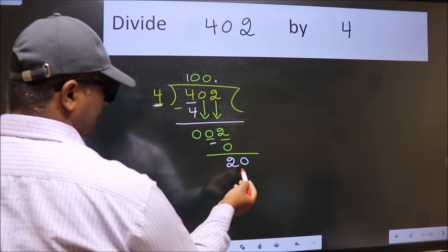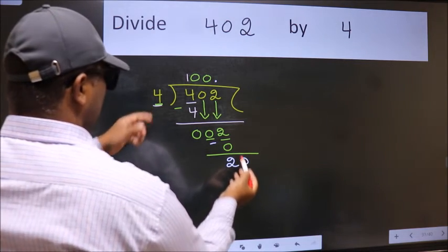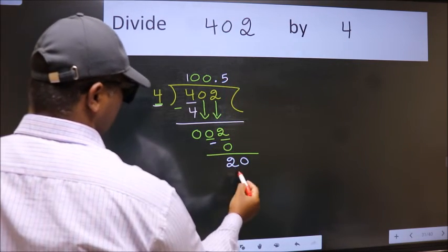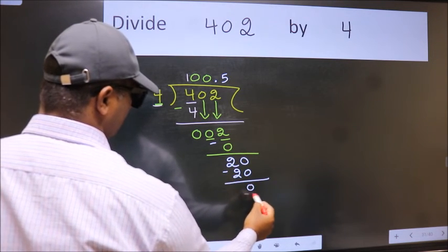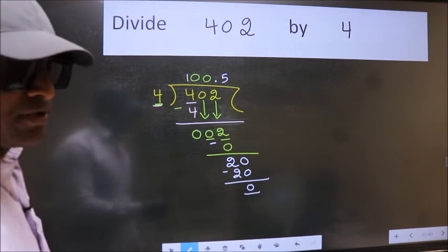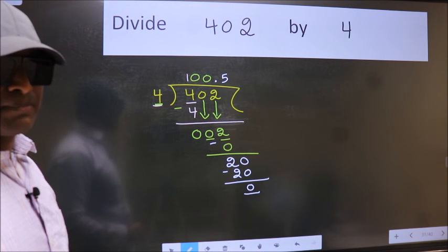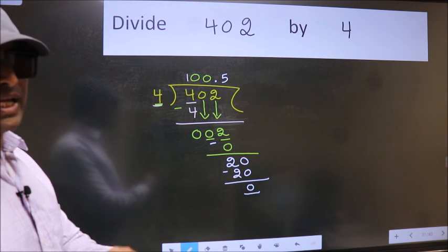So 20. When do we get 20 in 4 table? 4 fives, 20. Now we subtract, we get 0. Did you understand where does the mistake happens? You should not do that mistake.